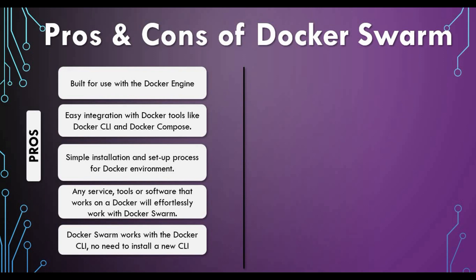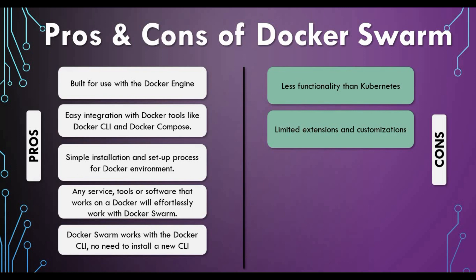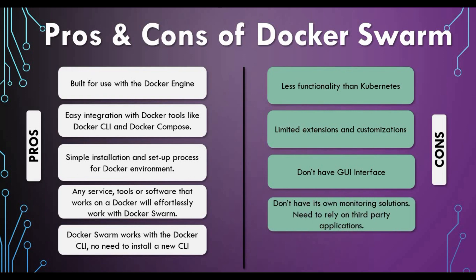The cons of Docker Swarm: unlike Kubernetes, it does not have as many features or functionality. Extensions and customization are limited. There is no built-in GUI interface — you need third-party tools for that. Docker Swarm also does not come with its own monitoring solution, so you have to rely on third-party applications for monitoring.